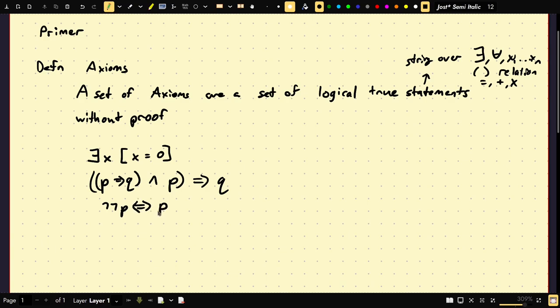Actually, you can find some people who will vehemently disagree with you about these kinds of things — they're called intuitionists. They disagree that certain things like this should be axioms. But if you take the negative of something twice, it has to be the same thing. So we can assume things like this are axioms.